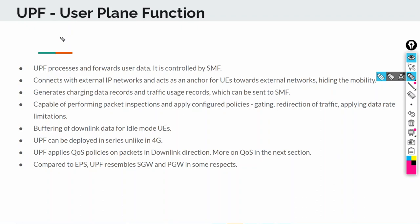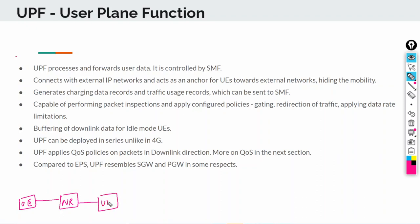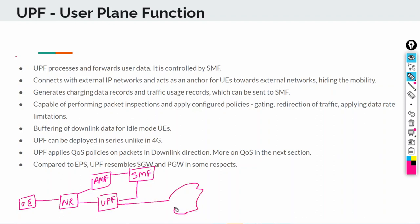The user plane function is one of the main elements in the 5G core. Before we look at these bullet points, let's go through the architecture diagram one more time. You have the user equipment connected to the new radio, the radio access network. This new radio is connected to the user plane function, and also to the access mobility function, AMF. The AMF is connected to the SMF session management function, and the SMF has an interface into the UPF. The UPF also has an interface into our data networks, external IP networks.